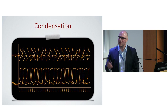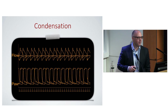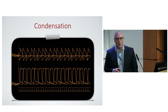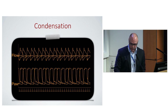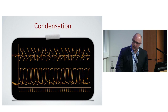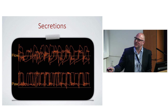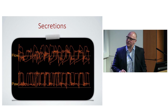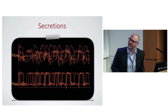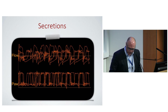We've done nothing to the patient, yet this problem slightly improved. How many people have seen wet tubes? This is condensation — once you clear the tube, the respiratory waveform goes back to normal and the auto-triggering stops. Similarly, a tube full of secretions causes auto-triggering: once you clear the chest via physiotherapy, all the auto-triggering goes away.